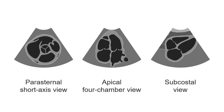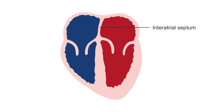Use all views where you can see the interatrial septum — that is, the parasternal short axis of the valves, apical four-chamber, and subcostal views. To better understand septal defects, let's take a look at how the interatrial septum is formed.